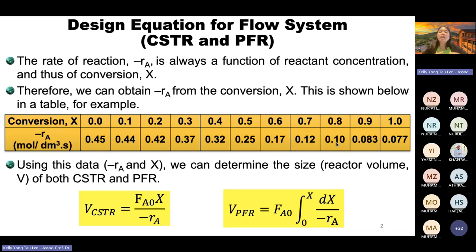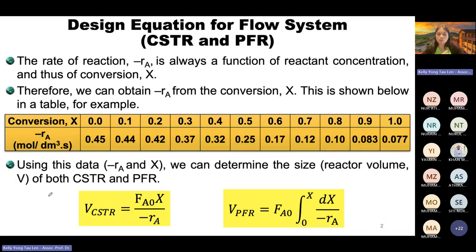After learning the design equations, we began designing single reactors — single CSTR and single PFR. What we learned last week was for a single reactor: one single PFR or one single CSTR. To determine the volume of these reactors, we need two important pieces of information: conversion X versus −rA.